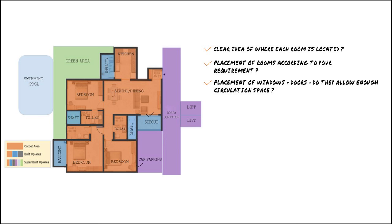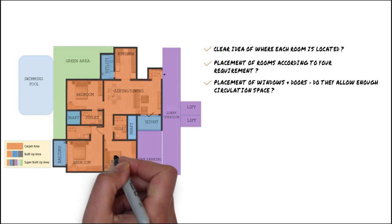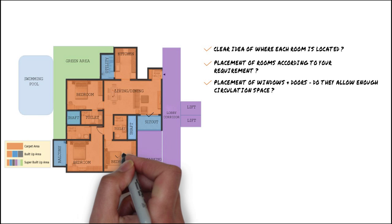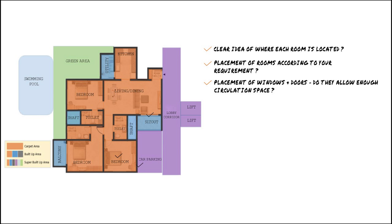While looking at the dimensions of a room, take the size of your bed into consideration. Based on this, figure out where you can place the wardrobes, and finally check whether there'll be enough space for circulation after the bed and wardrobes are installed. Remember that the furniture and fixtures are not to scale in most marketing brochures.